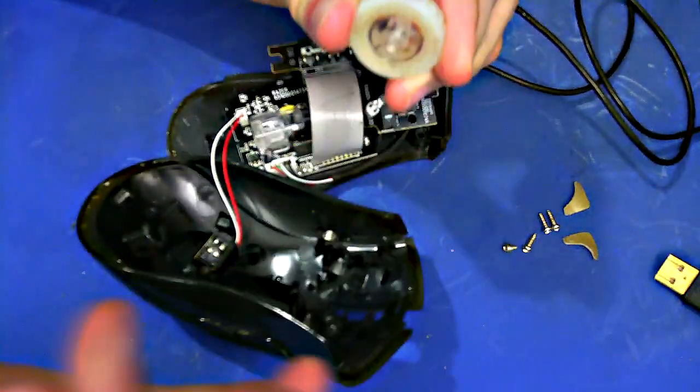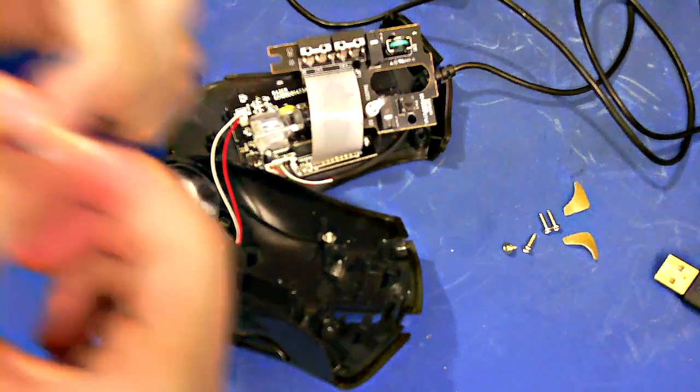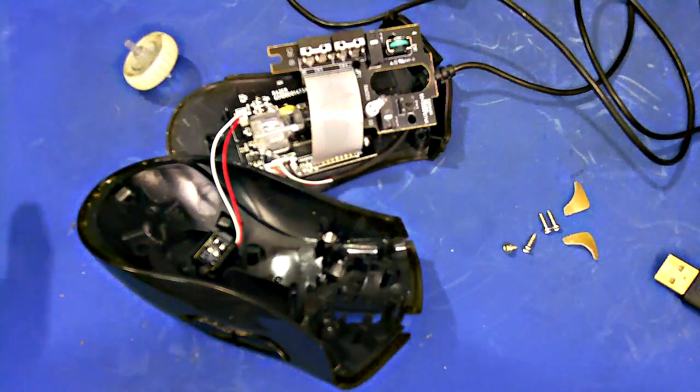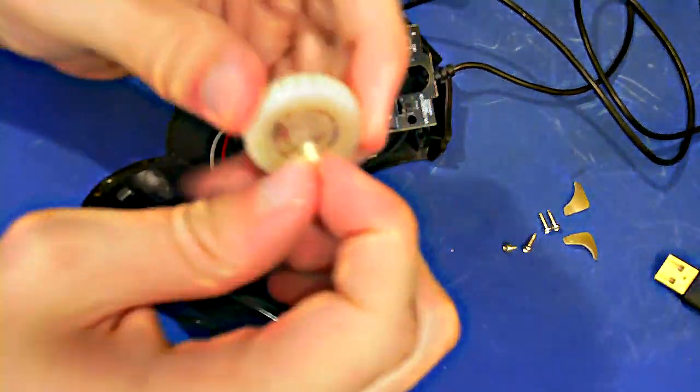So you're going to take the scroll wheel out. One side of the scroll wheel has kind of a little divot on one side. Mine had a hair in that and stuff. It's a really old mouse. So you're going to take a piece of tape and tape it on the side that has the divot, the smaller side.